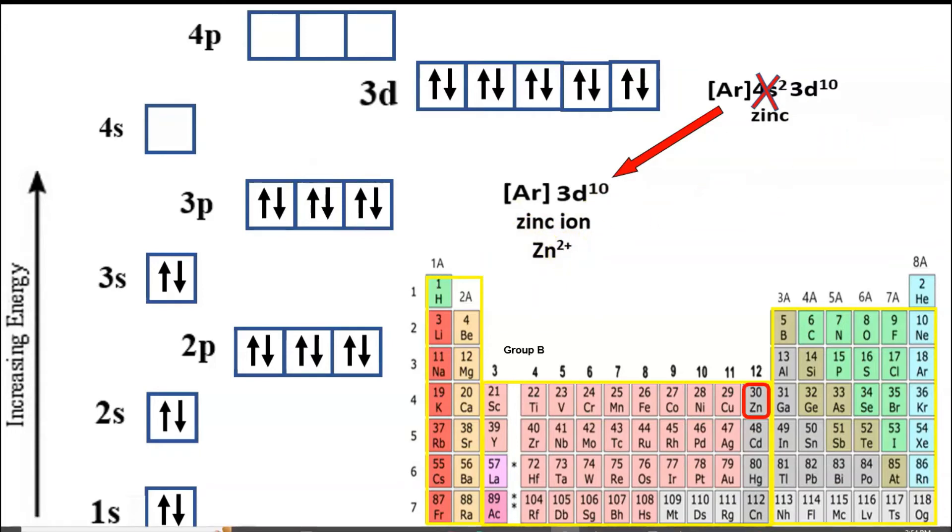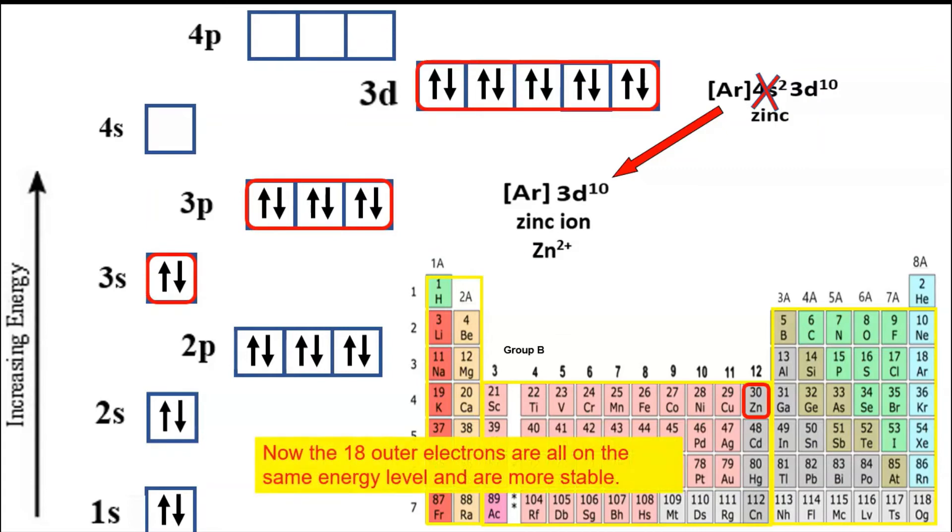To summarize, we've got the 4s that's empty but we've got the third energy level that is completely filled with 18 electrons. Those 18 electrons are all the same energy level, and all of that is much more stable, so that's why it's preferred.